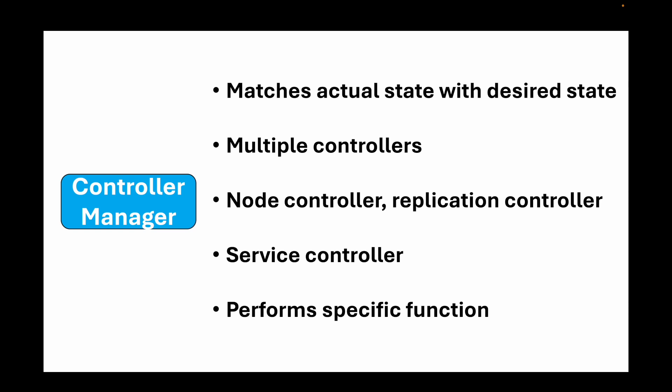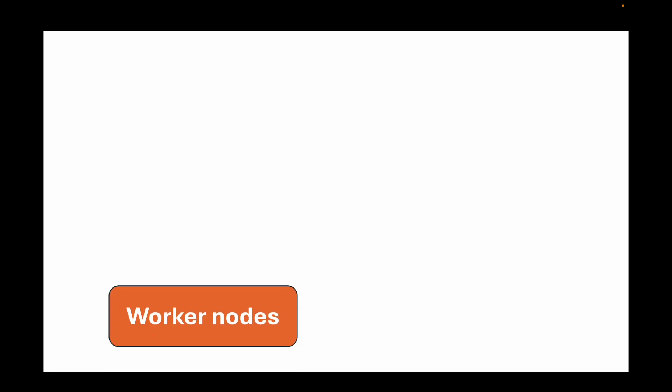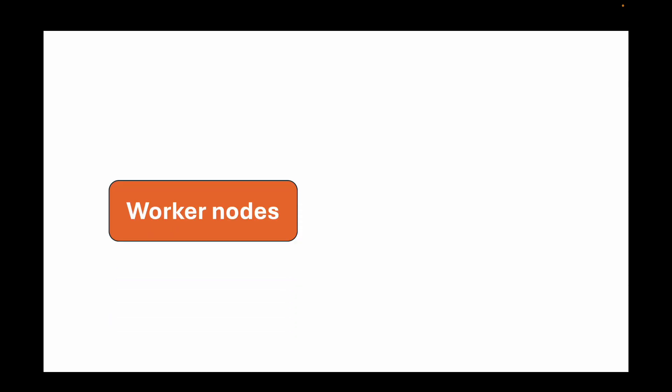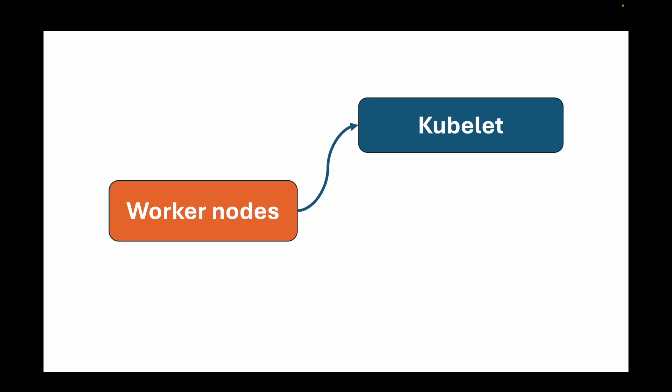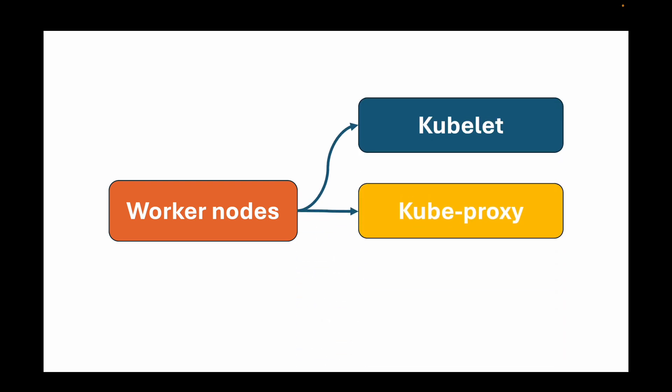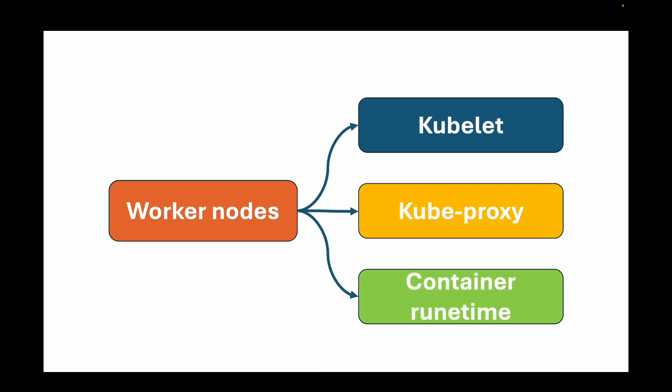Next, let's look at the components available on the worker nodes. This is where our containers and workloads will be running — whatever container applications we deploy will run here. Under each worker node we will have three components: the kubelet, kube-proxy, and a container runtime.